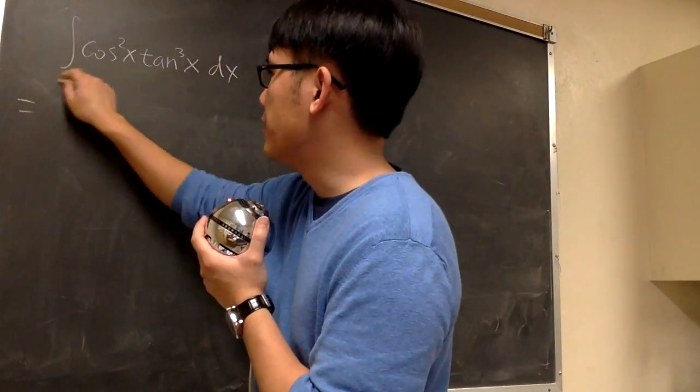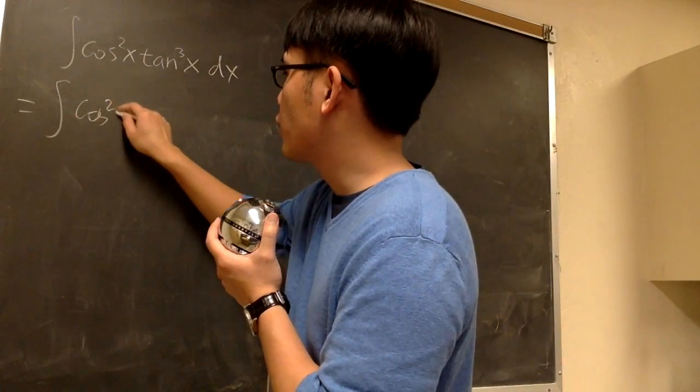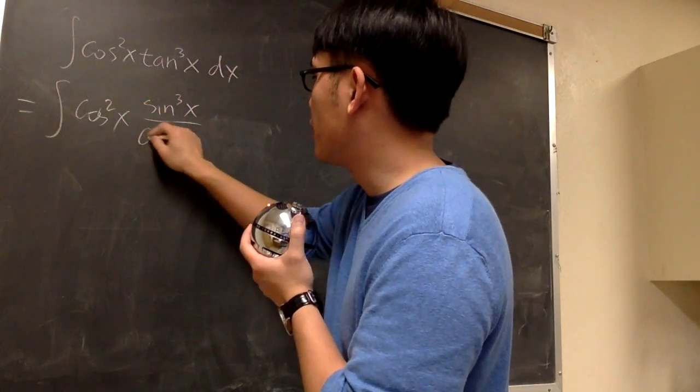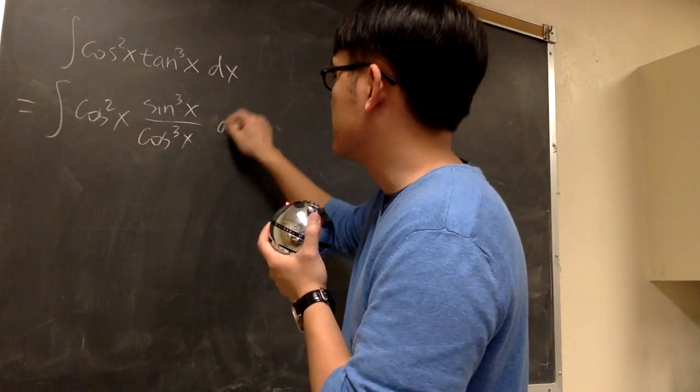We'll do that. So this is the same as the integral of cosine squared x. This is sine to the third power x over cosine to the third power x dx.